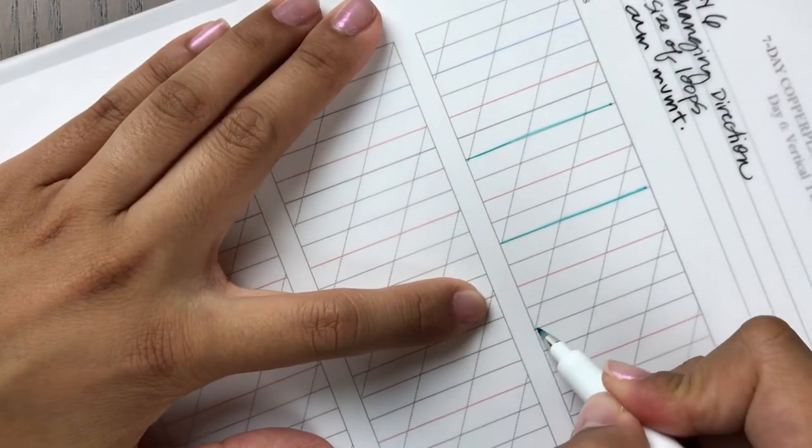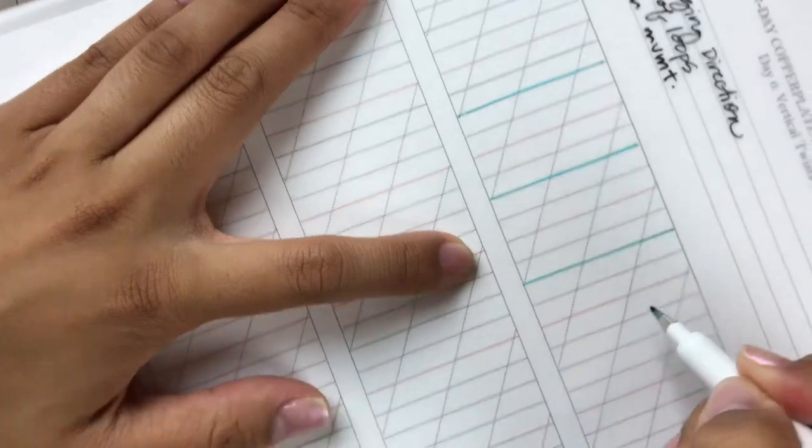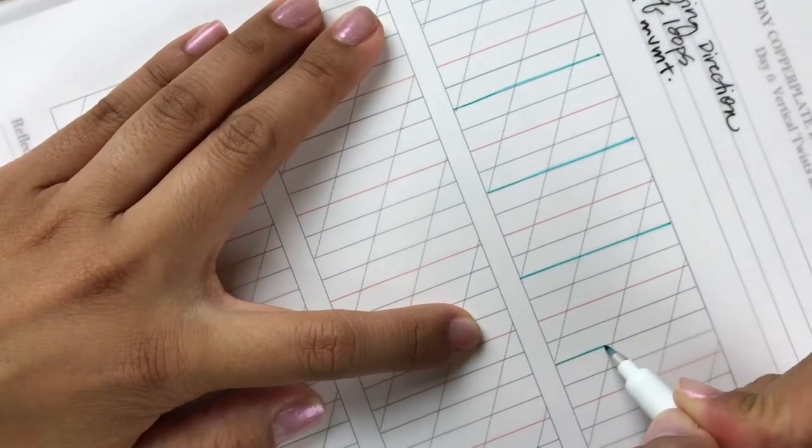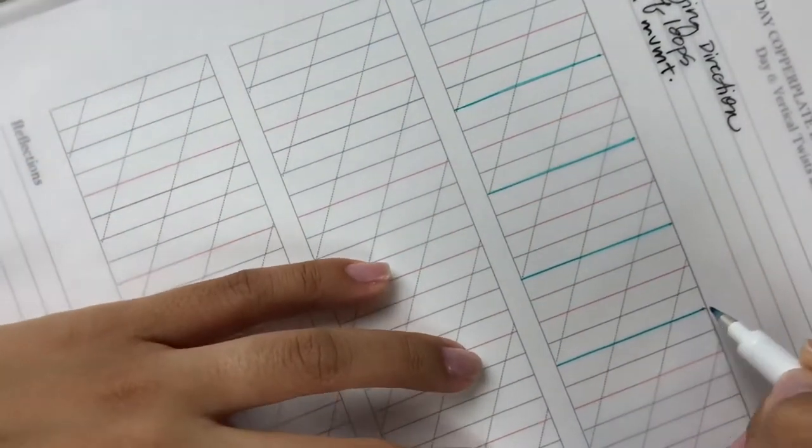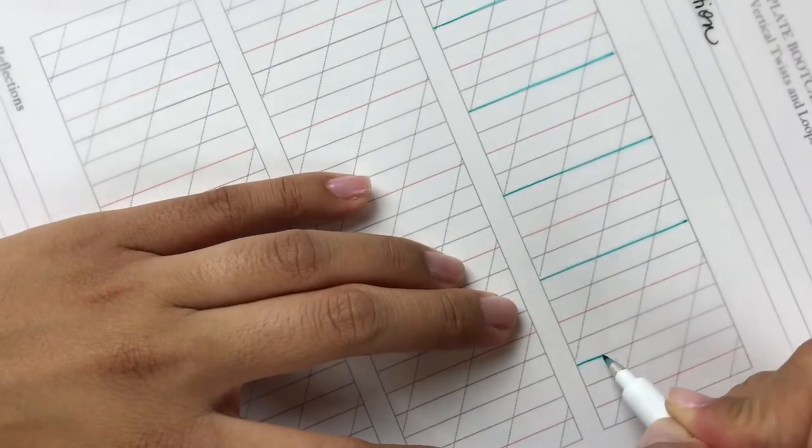So anywhere where there should be a blue you can make that a little bit more bold. If you don't have a blue pen that's okay too, just make sure you indicate and highlight this line here.